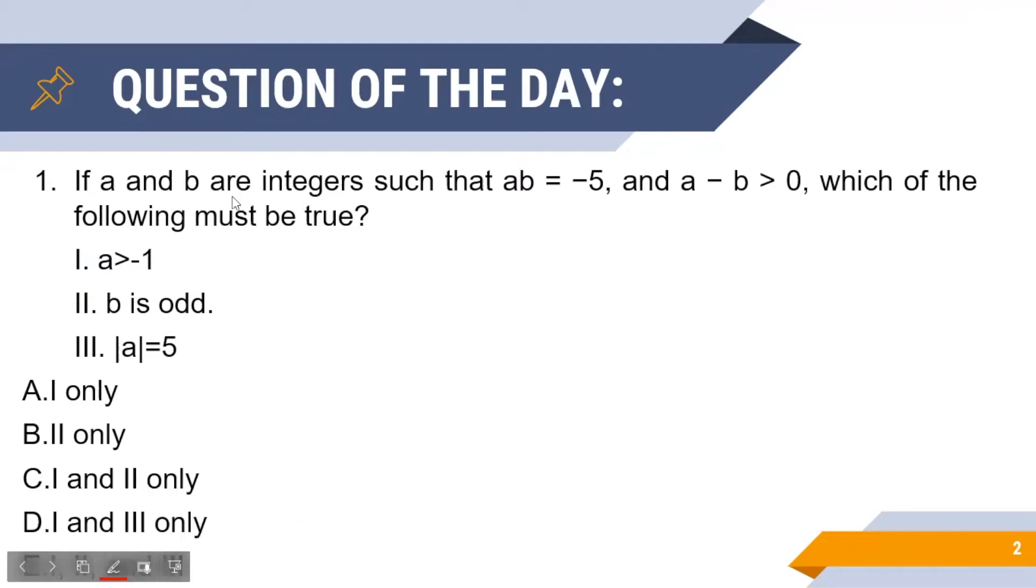As you can see, a and b are two integers such that their product is equal to minus five. Now there are only four possible combinations of a and b under which this condition holds true. These are: when a equals five and b equals minus one; when a equals minus five and b equals one; when a equals one and b equals minus five; or when a equals minus one and b equals five.